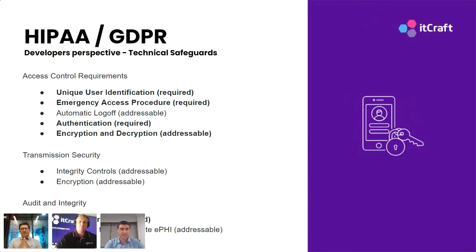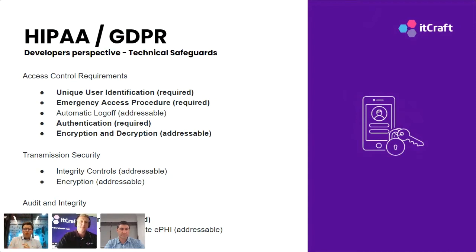Let's imagine some examples. Several HIPAA breaches every year happen because of the loss or theft of unencrypted devices. Imagine a situation where your doctor's computer has been stolen — because the data on his computer is encrypted, the new owner of this computer will basically not be able to view any protected health information.